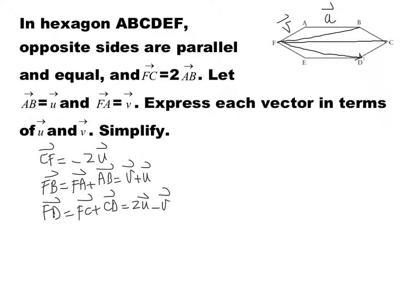And the last one is vector CA. To find vector CA, I can write CA as CF plus FA. But CF has the same magnitude as FC, which is 2u, but in opposite direction. So it's going to be negative 2u plus FA. FA is v. So it's going to be v minus 2u.